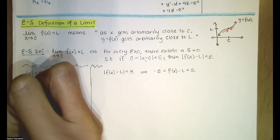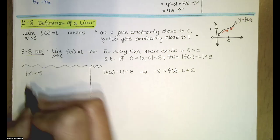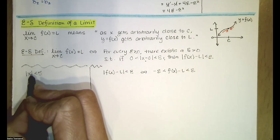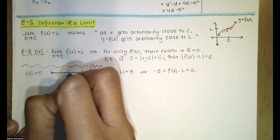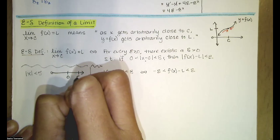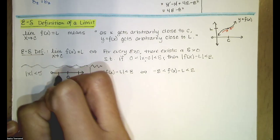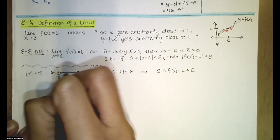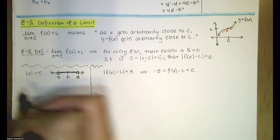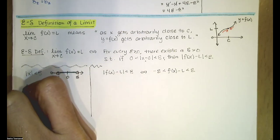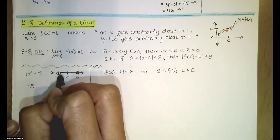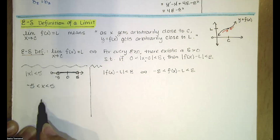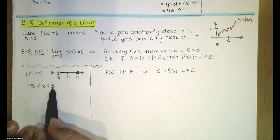Let's review. If we have the absolute value of x less than five, we're asking what x values have a distance from zero less than five. All the numbers between zero and five are less than five units from zero, and all the numbers between negative five and zero are also less than five units from zero. So all x values in that range satisfy the inequality — x has to be between negative five and five.